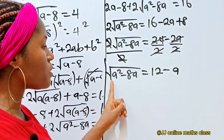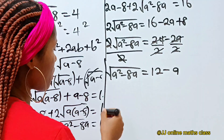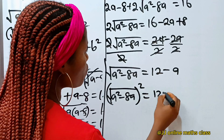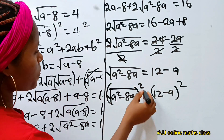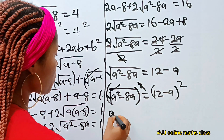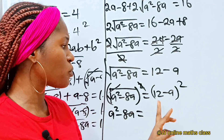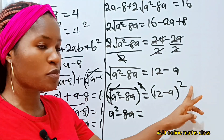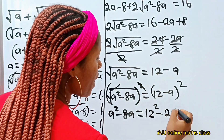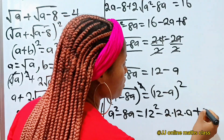Now let's square both sides to remove the square root sign. So we have: square root of a squared minus 8a, all squared, equals 12 minus a, all squared. The square removes the square root on the left, giving us a squared minus 8a. On the right, using the (a minus b)² formula — a squared minus 2ab plus b squared — we get: 12 squared minus 2 times 12 times a, plus a squared, which is 144 minus 24a plus a squared.